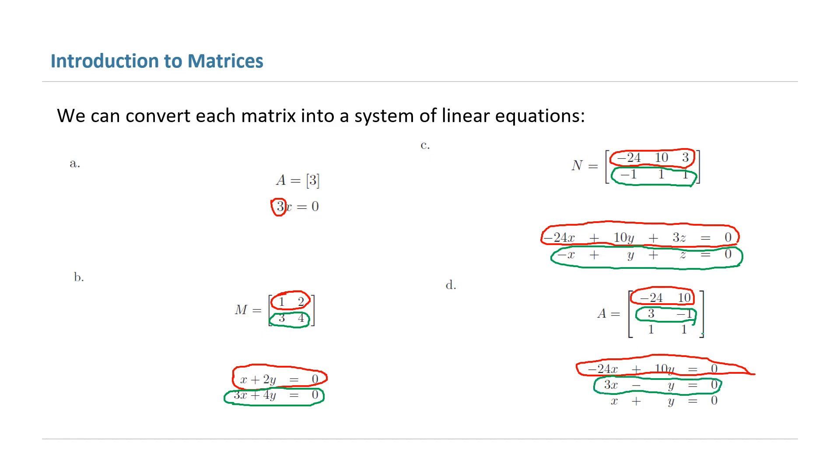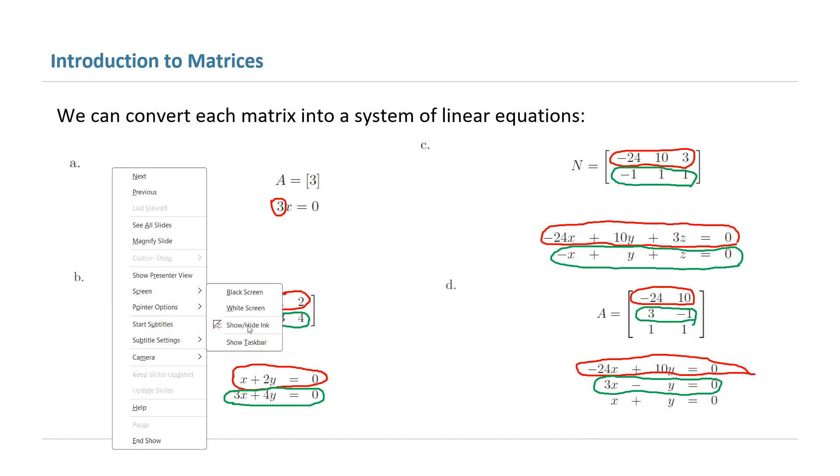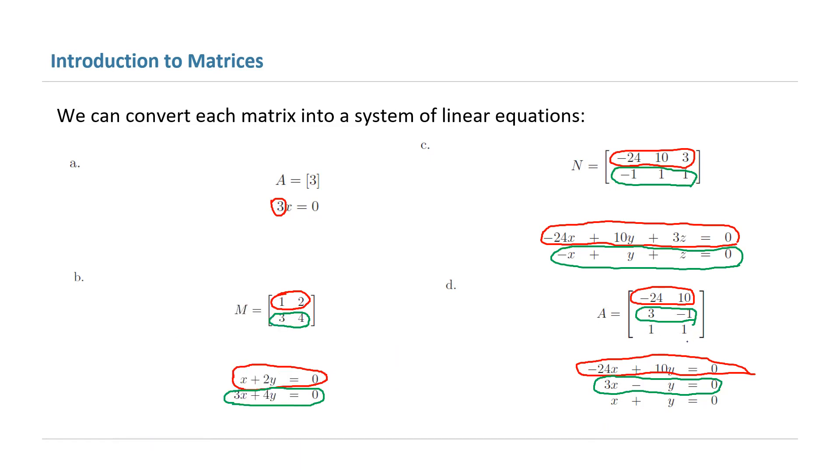And finally, the last row includes 1 and 1, which converts into x plus y equal to 0. Let me use a different color here: 1 and 1 converts to x plus y equal to 0.